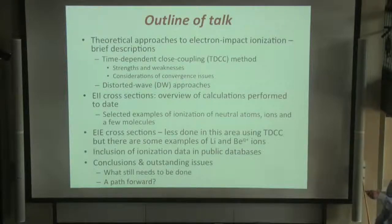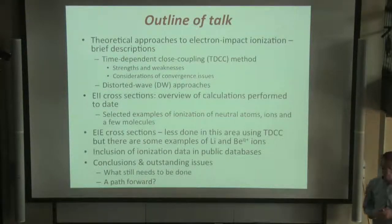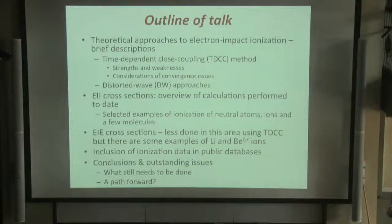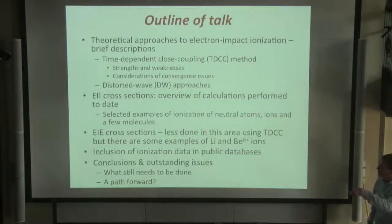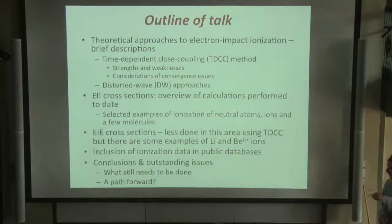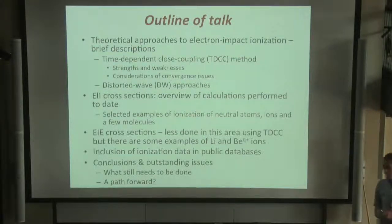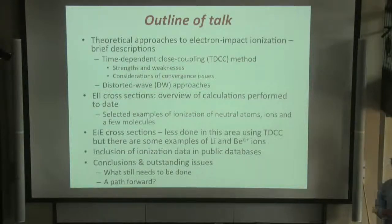We'll talk about the strengths and weaknesses of our method, what it can calculate really well, what collision processes and systems it can't calculate as well. And we'll talk about some of the convergence issues that might lead to uncertainty in the time-dependent close coupling calculation. Because I'll be doing a lot of comparison to distorted wave approaches, I'll give a very brief overview of what that means for electron impact ionisation.